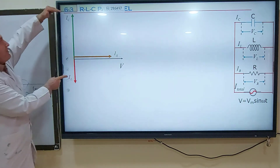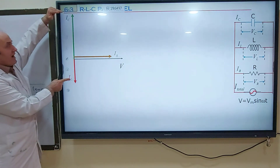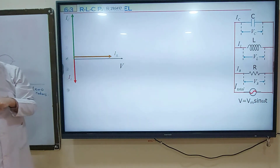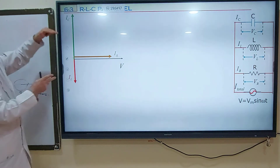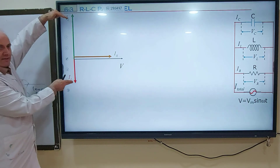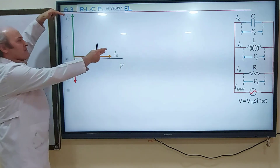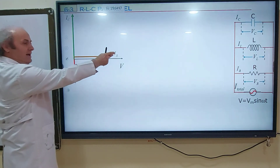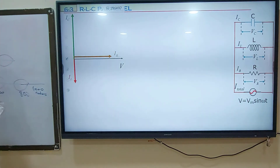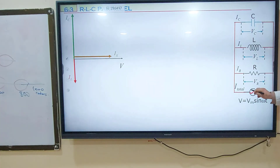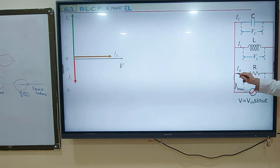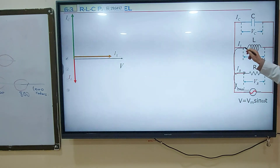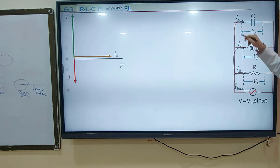What is the phase angle difference between IC and IL? This is an exam question as well. What is the phase angle difference between IC and IL? What is the phase angle difference between IC and IR? 90 degrees. IR and IL? 90 degrees. The electric current of the generator is shared by the resistor, by the coil, by the capacitor.